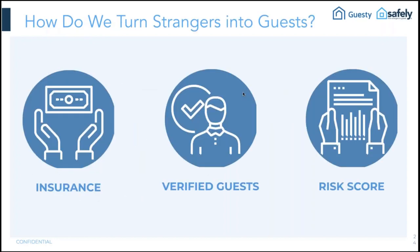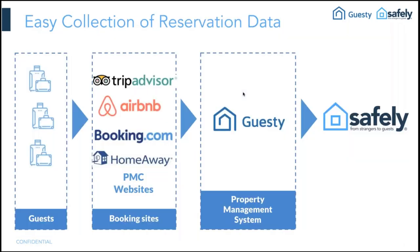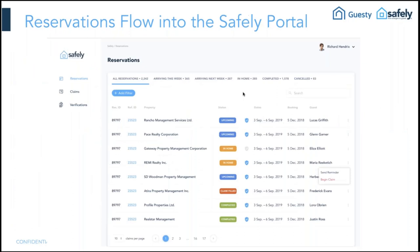Just like Guestie provides the right technology solutions so you're more effective, all we do is make your stays safer. First, we provide primary commercial insurance for each rental — no more damage deposits. The guest pays to have up to a million dollars backing their reservation. Then we verify the guest is trustworthy and assign a risk score so you can focus on the riskiest guests and let the good ones get right through. Because we're a Guestie partner, the reservation can take place on any booking site or your own website. You set a fee for the guest to pay and eliminate that damage deposit. All reservation data flows straight through Guestie to us at Safely.